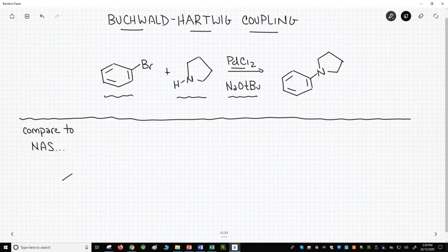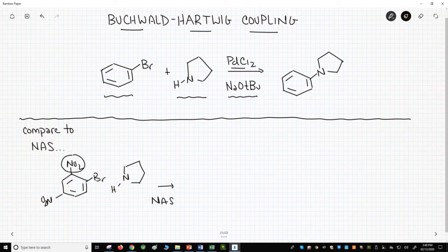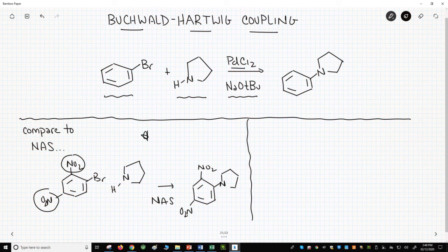Here is another reaction that can put nitrogens on a ring. That's the nucleophilic aromatic substitution, or NAS. The challenge with NAS is that you need electron withdrawing groups, like nitro groups, on the ring to activate the ring so it'll be attacked by your amine nucleophile.